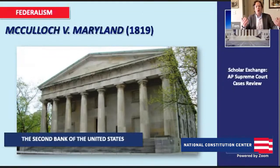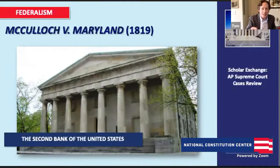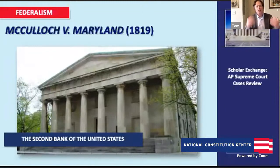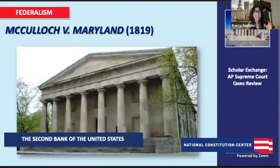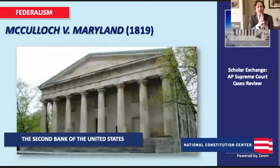Marshall also says that when the national government is acting legitimately, it is supreme. That's what Article Six — the supremacy clause — says. What Maryland is trying to do is use state power to tax this national institution out of existence, but the power to tax is the power to destroy, and so that tax is unconstitutional. Kerry: And I love how you said that — when the national government is acting correctly, they have supremacy. So would Marshall imply that if it wasn't acting correctly, they wouldn't have supremacy? Tom: Yeah, exactly.